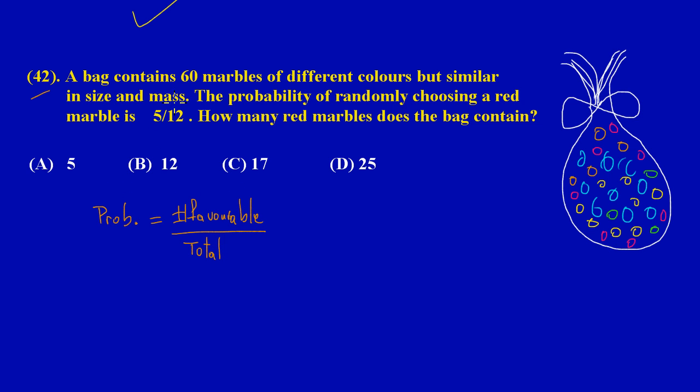So the probability here—since they gave us the probability, I can just simply take my probability that they gave me and substitute it. So I can say my probability is really 5 upon 12. And that must be equal to—they said that the bag contains 60 marbles of different colors, so obviously a total of 60 marbles were in the bag. So I can say that is equal to something over 60, because remember 60 is the total. They're asking us to find how many red marbles. So the total amount is 60, and we want to know how many red marbles are in the bag.